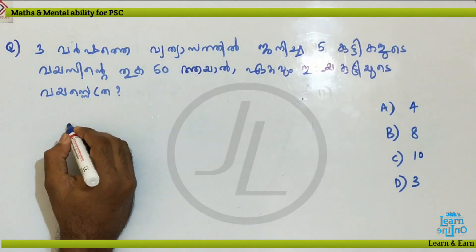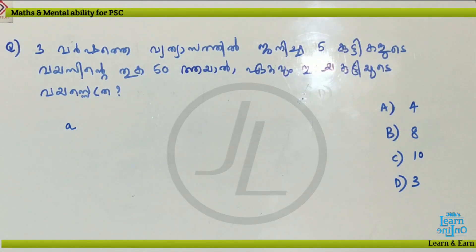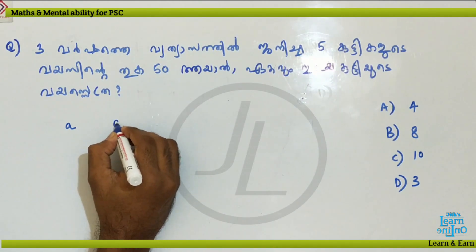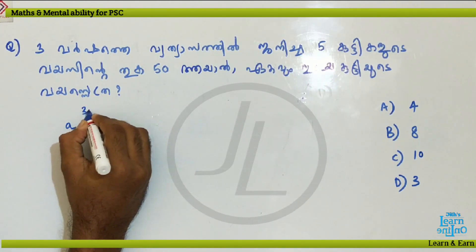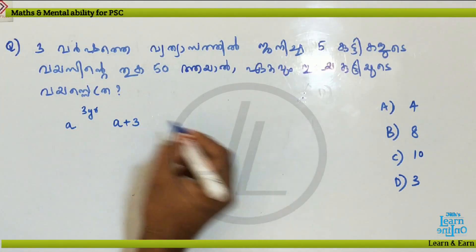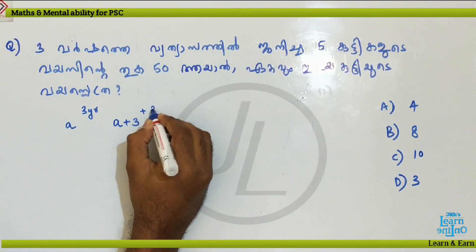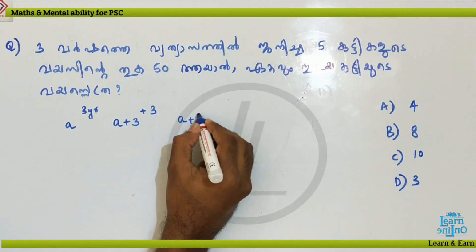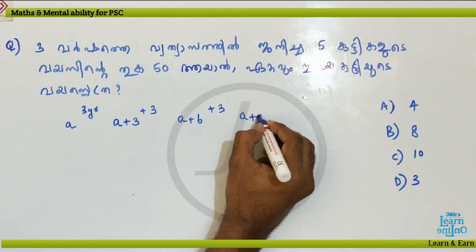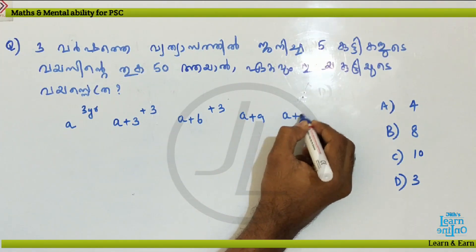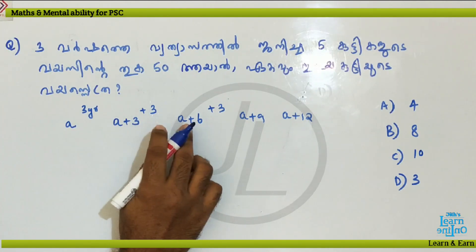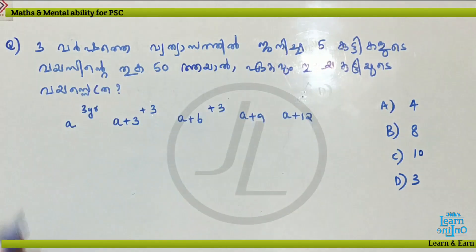In the next slide, we will see the plus 3 terms. If you take the 3rd area, you will see this. Here are 5 symbols: a, a plus 3, a plus 6, a plus 9, a plus 12.